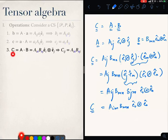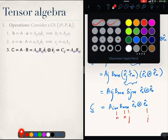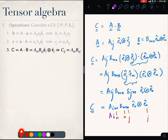So, I have expressed C as this and these two are the same. All I have to do is I have to do some renaming. I have to call m as n and I have to call my n as j. So, then I will get back A_in B_nj e_i tensor e_j which is what I have over there.